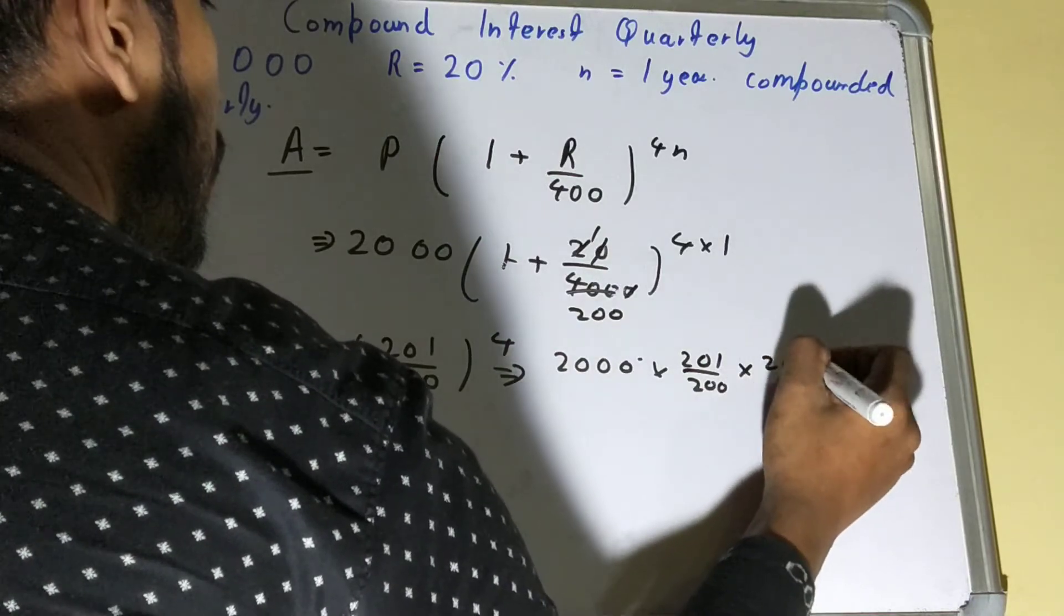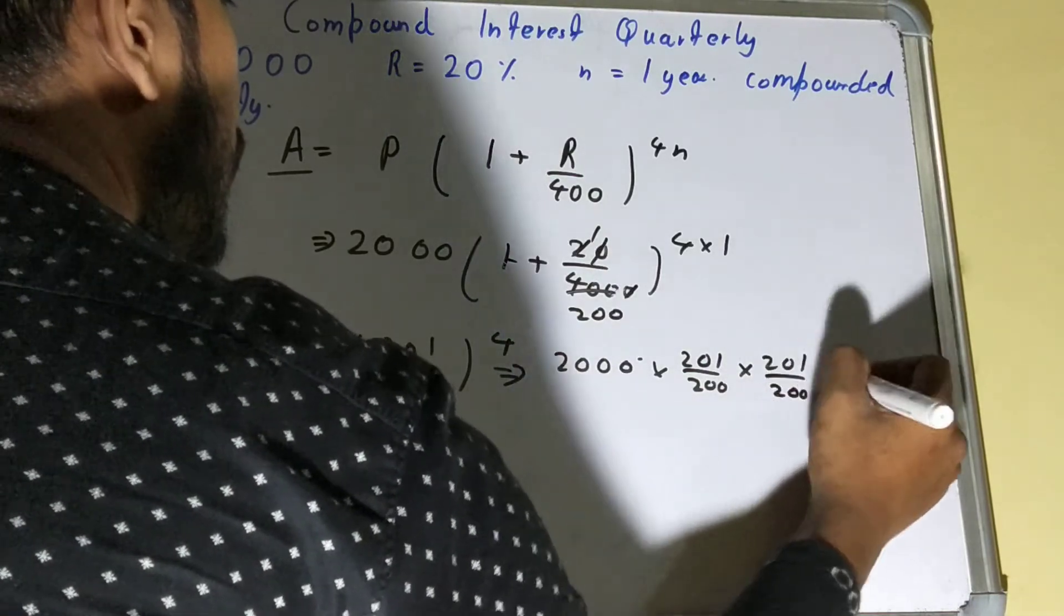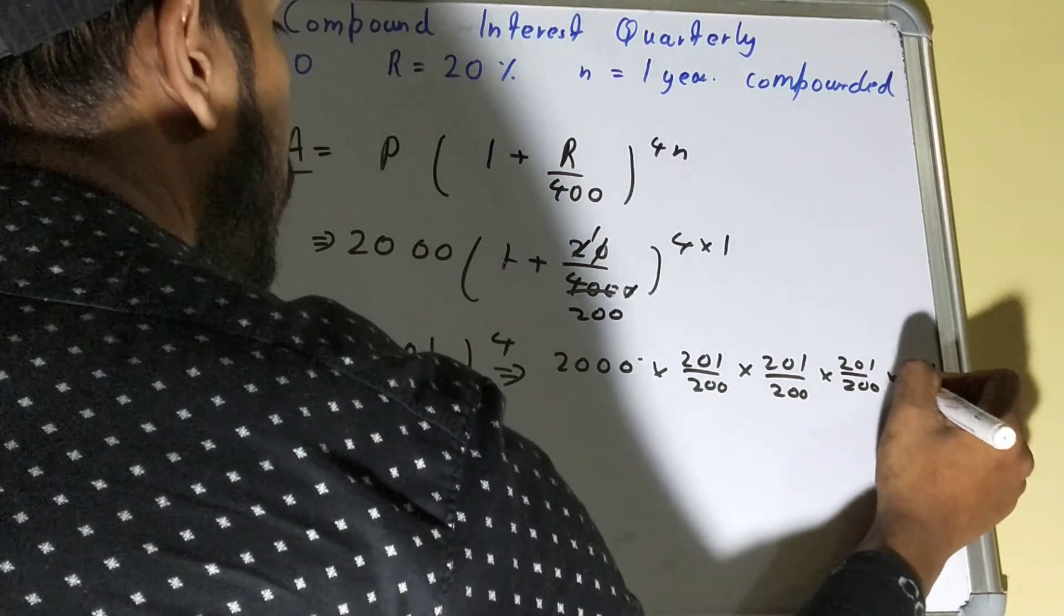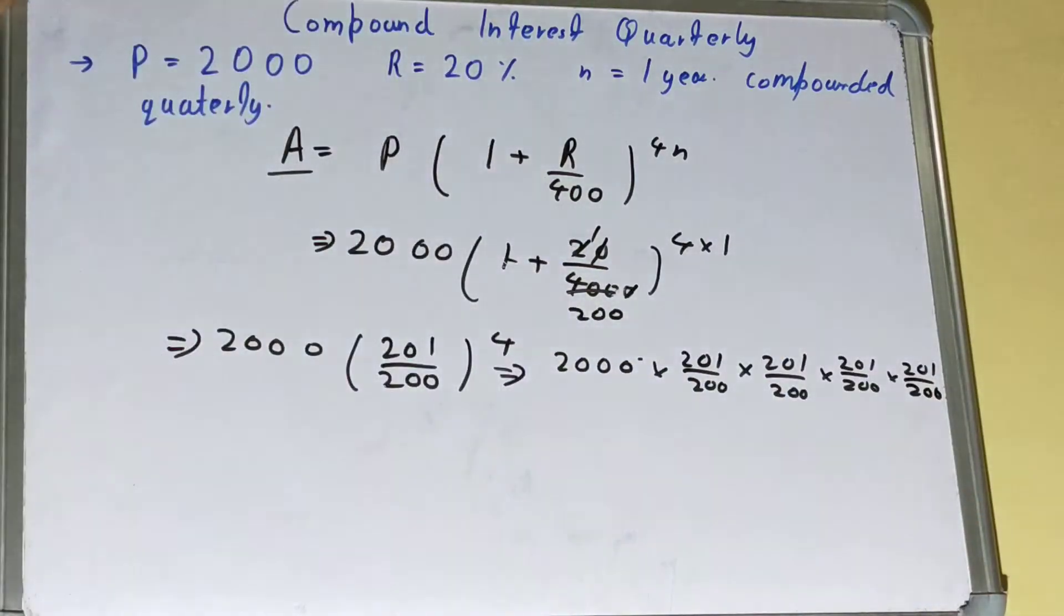Then 201 upon 200, 201 upon 200, and for one more time 201 upon 200. Before doing the calculation, you can simplify it a bit.